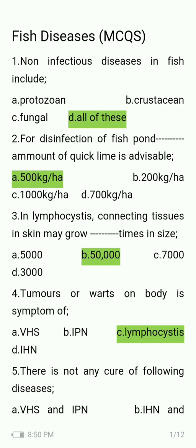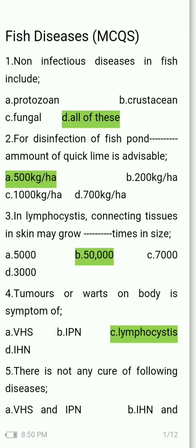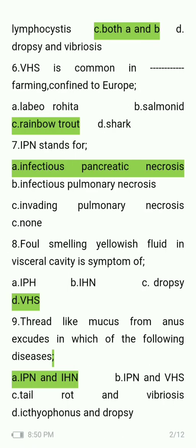Tumors or warts on the body is a symptom of which disease — VHS, IBN, lymphocystis, or IHN? The answer is lymphocystis. There is no cure for which of the following — VHS and IPN, IHN and lymphocystis, or both A and B? The answer is both A and B.